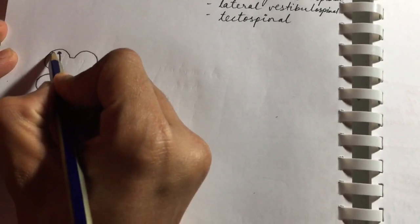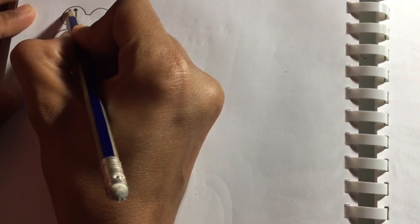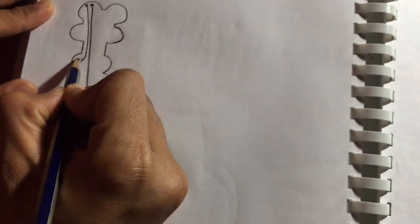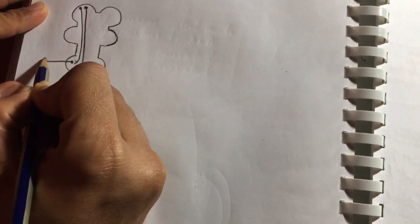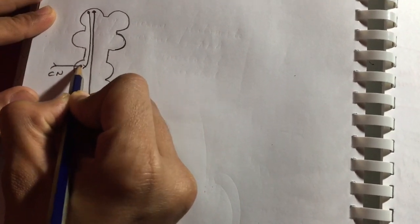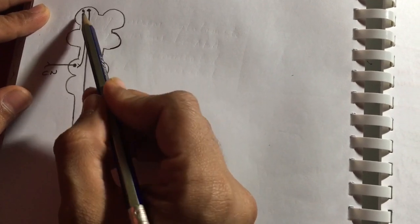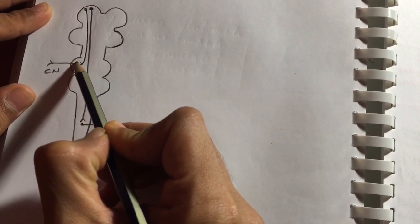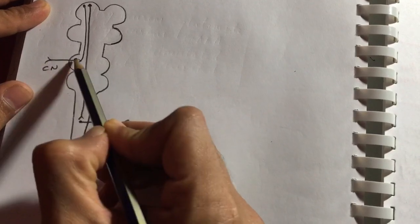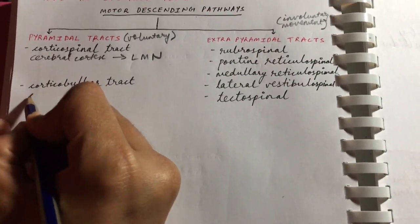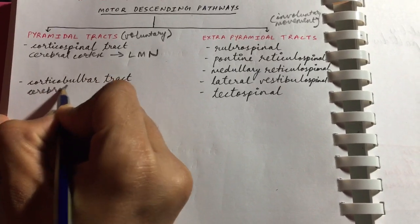The corticobulbar tract starts from the cerebral cortex and connects with the motor nuclei of cranial nerves. So the corticobulbar tract connects the cerebral cortex to the motor nuclei of cranial nerves — that's the main thing.